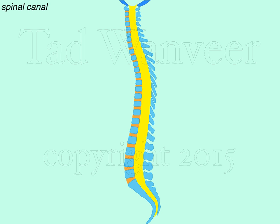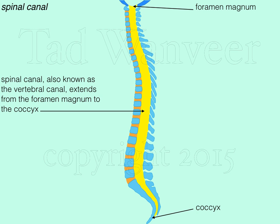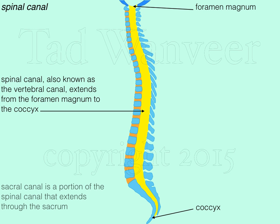Moving on to the spinal canal, which is a long bony canal opening within the vertebral column. The spinal canal is also referred to as the vertebral canal, shown in yellow in this illustration. The spinal canal extends from the foramen magnum to the coccyx. There is also a canal within the sacrum called the sacral canal, which comprises a portion of the spinal canal.